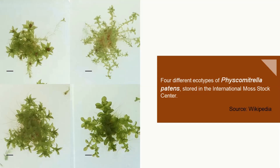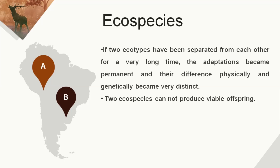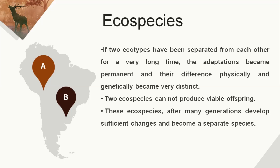For example, Psychometrella patens has four different ecotypes stored in the international moss stock center; this information can be collected from Wikipedia. Now, ecospecies: if two ecotypes have been separated from each other for a very long time, the adaptations become permanent and their physical and genetic differences become very distinct. The two ecospecies cannot produce viable offspring — they are not yet fully reproductively isolated in that they can breed, but they cannot produce viable offspring.